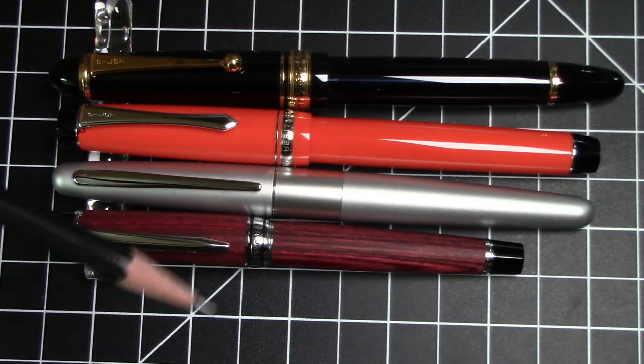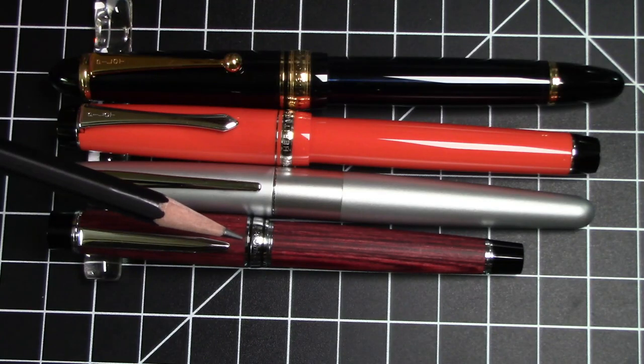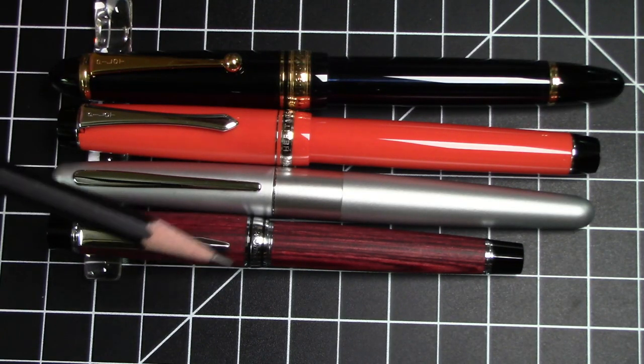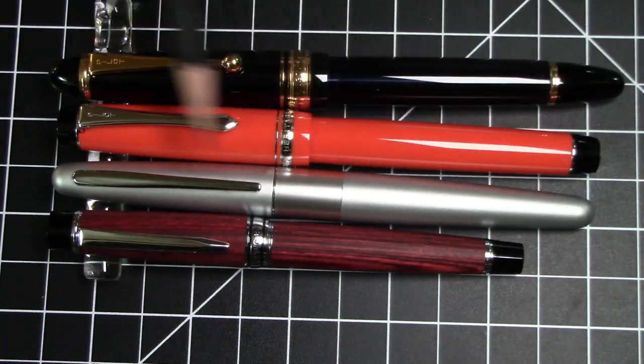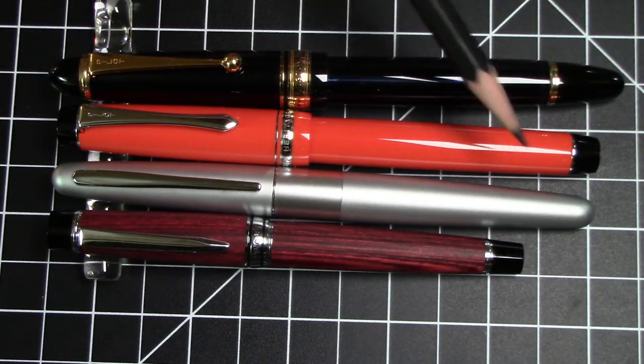So here we are comparing this Legno 89S to some other Pilot pens. This is a Pilot Metropolitan, sort of a very standard size pen. Again, quite a bit smaller than that.